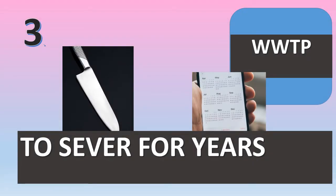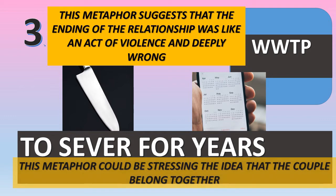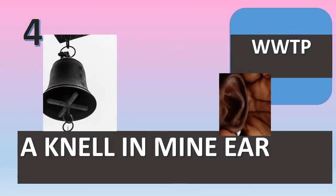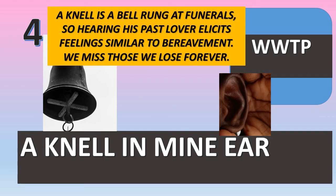We've also got 'to sever for years,' and we can say that this metaphor suggests that the ending of the relationship was like an act of violence and was deeply wrong. It stresses the idea that they belong together — it's an act of violence, their parting. We've got 'knell in mine ear,' a wonderful metaphor: a knell is a bell rung at funerals, so hearing his past lover's name elicits feelings similar to bereavement. 'We lose forever' — this is a loss that he will never come to terms with or truly get over.